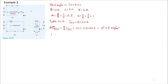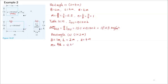For Rectangle 2, the smaller one is 1 by 2. The B value is 1, L is 2, and Z is 4. So for Rectangle 2, M is B over Z — that's 0.25 — and N is L over Z, which is 0.5. Again, we use Table 10.10 to find the influence factor.